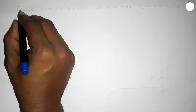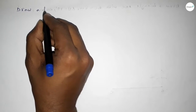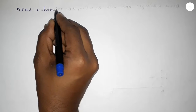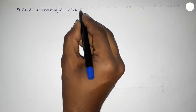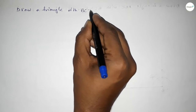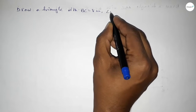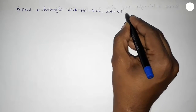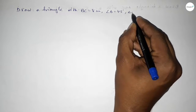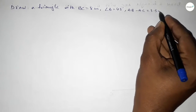Hi everyone, welcome to a size chair class. Today in this video we have to draw a triangle ABC with BC equal to 8 centimeters, angle B equal to 45 degrees, and AB minus AC equal to 3.5 centimeters. So let's start the video.